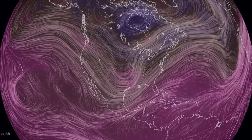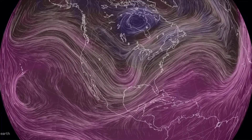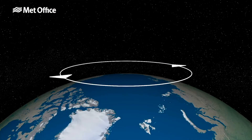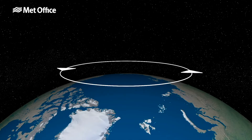This ties into the polar vortex and why it's important. Similar to the jet stream, the polar vortex is also a band of winds flowing from west to east, but it has some distinct features. The polar vortex is much higher than the jet stream — it typically flows 10 to 30 miles above the surface and it circles the pole in a region called the stratosphere.